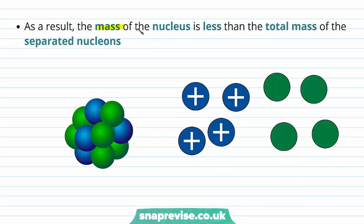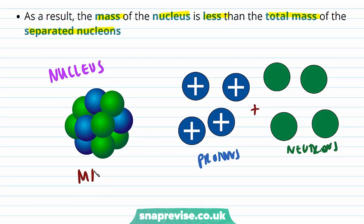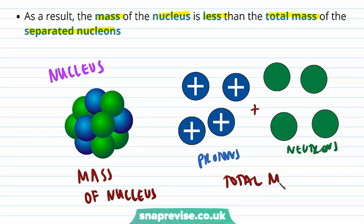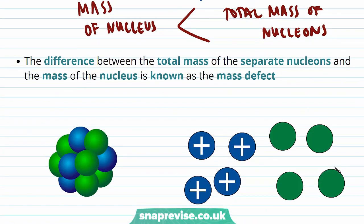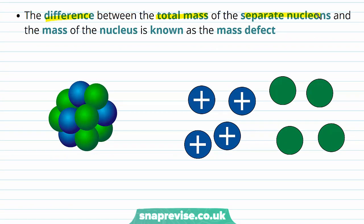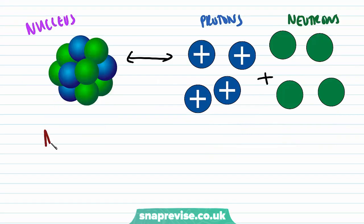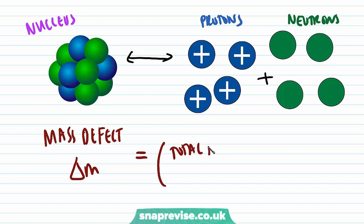As a result, the mass of the nucleus is less than the total mass of the separated nucleons. If we found the mass of the nucleus and compared it to the total mass of the nucleons that make it up, we would find that the mass of the nucleus is less. The difference between the total mass of the separate nucleons and the mass of the nucleus is known as the mass defect. The mass defect Δm is equal to the total mass of the nucleons minus the mass of the nucleus.